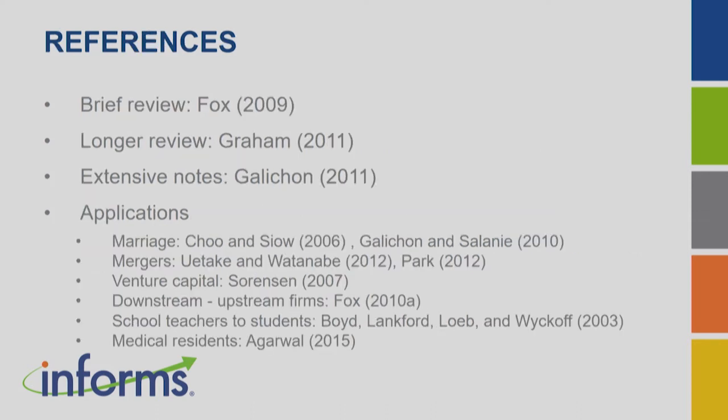Fox applied the inequality estimator when estimating the market for car parts. References for empirical work include Fox for a brief review and Graham for a longer review. Applications include the marriage market by Choo and Siow, and Sorensen used the matching model to correct for selection problems in the venture capital market. The key point is that matching models use pairwise stability equilibrium to get estimates of parameters using match outcome data. This concludes the matching and demand component; Professor Yan will now talk about dynamic models.